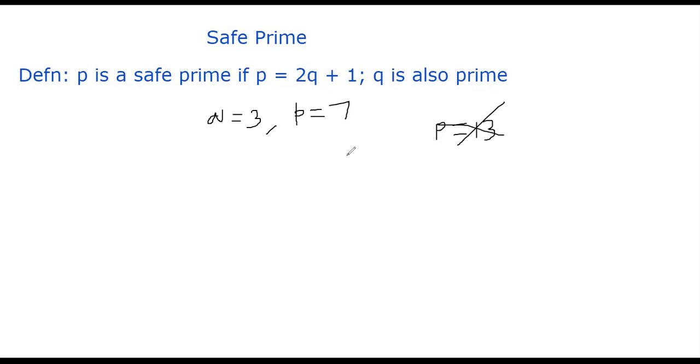What about 11? 11 is a safe prime, because 11 can be written as 2 times 5 plus 1. So you get the idea of what is the meaning of a safe prime.